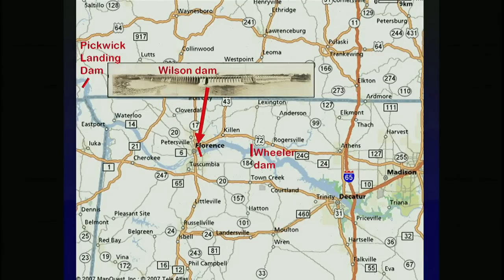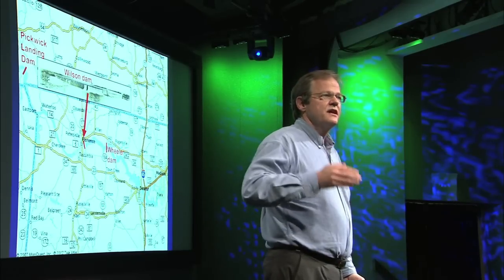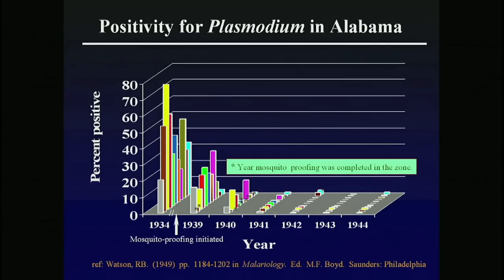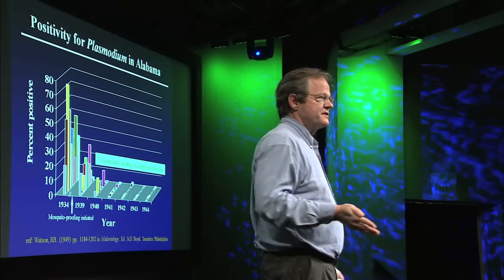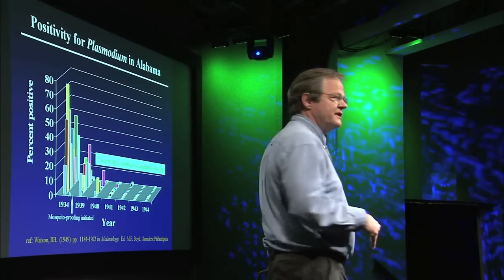The Tennessee Valley Authority was in a bind — there was no DDT, no chloroquine. What did they do? They decided to mosquito-proof every house in northern Alabama. They divided northern Alabama into 11 zones, and within three years, at about $100 per house, they mosquito-proofed every house. The data show that for each of the 11 zones, just the mosquito-proofing — and nothing else — caused the eradication of malaria. This was published in 1949 in Boyd's Malariology, but almost no malaria experts even know it exists.